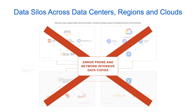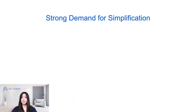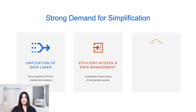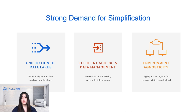As you can see, there is a strong demand for simplification as technology continues to improve. First, there is a need for unifying data silos across multiple locations, supporting multiple APIs and a common user experience to meet the demands of analytics and AI applications. Second, with storage separated from compute, the platform needs to provide easy and efficient access to data regardless of the location of data. Lastly, the solution needs to be environment-agnostic and multi-cloud ready to accommodate the future state of compute and storage technology.